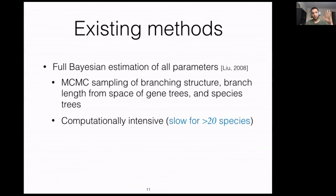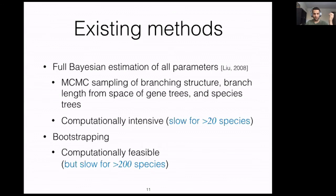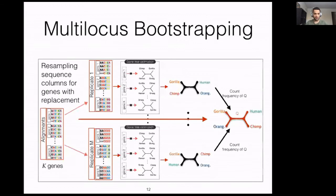To address this issue while accounting for discordances between gene trees and the species tree, this is not just simple bootstrapping. One existing method is full Bayesian estimation of all parameters, which requires MCMC sampling of species tree topology, species tree branch lengths, gene tree parameters, gene tree branch lengths, and so on. This is computationally intensive and slow for more than 20 species. The other solution is multi-locus bootstrapping, which is computationally more tractable but still slow for 200 species.